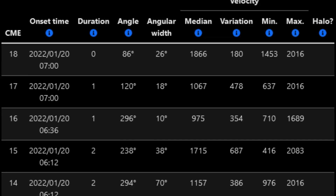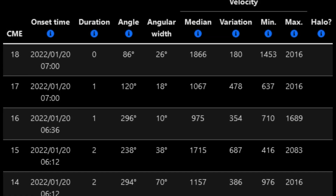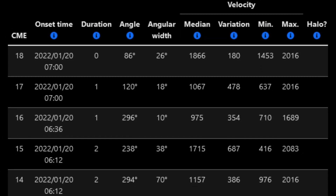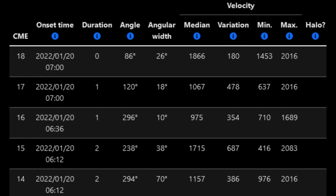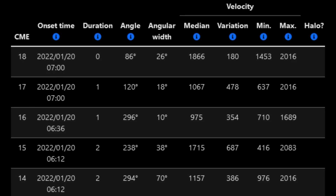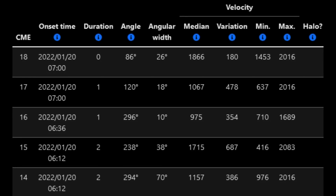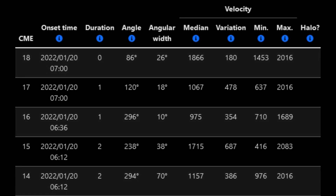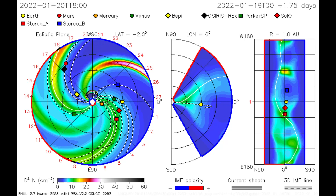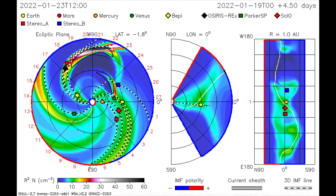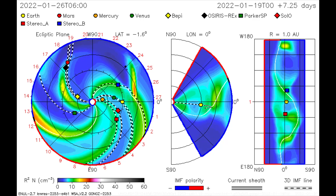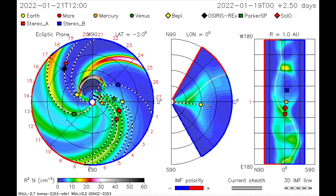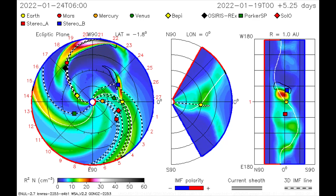Shown on the CME chart are 5 CMEs that erupted from the same area of the sun today. On this CME model, the M-class and C-class flares that erupted close together on the 19th are mapped.